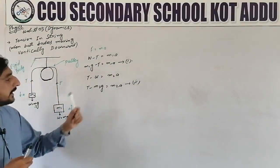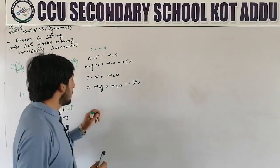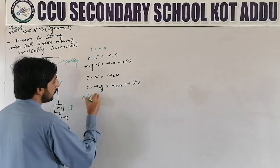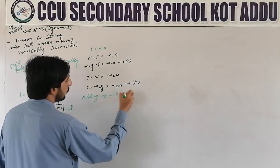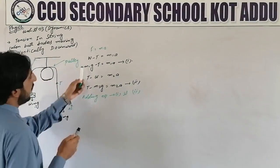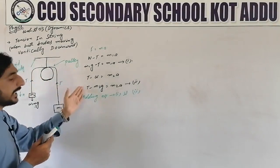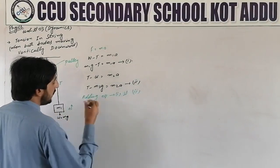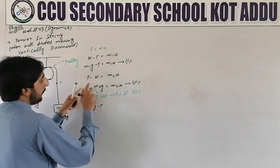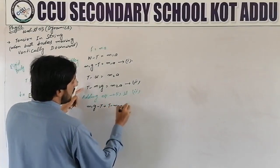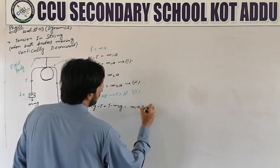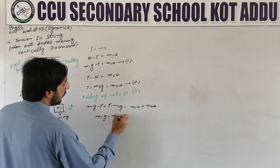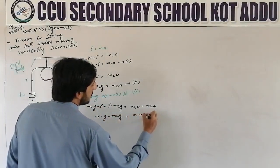From these two equations we need to find acceleration and tension. We add Equation 1 and Equation 2. Adding the left-hand sides: m1g minus T plus T minus m2g. Adding the right-hand sides: m1a plus m2a. The T terms cancel, giving us: m1g minus m2g = m1a plus m2a.